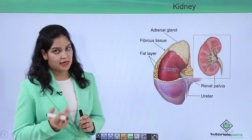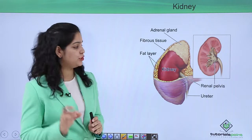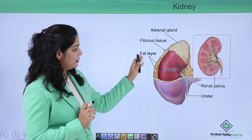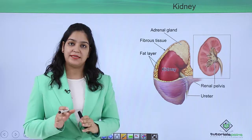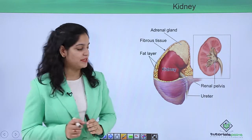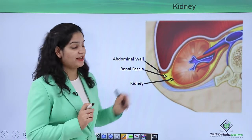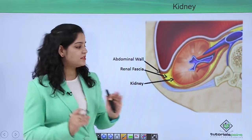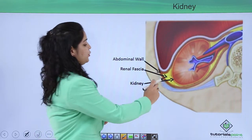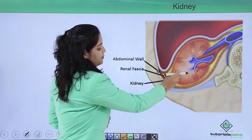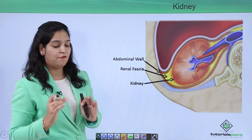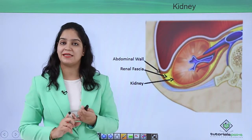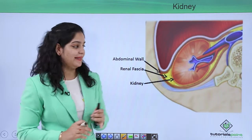Other than the renal capsule, two more layers are present: one is the fat layer made up of adipose tissue, and on top of that a fibrous tissue called the renal fascia. Both the adipose tissue layer and the fascia layer protect the kidney. On the kidney, the adrenal gland is also present. The renal fascia is the most important layer, anchoring the kidney to the abdominal wall. So three layers are present: the renal capsule, the adipose tissue layer, and the renal fascia.